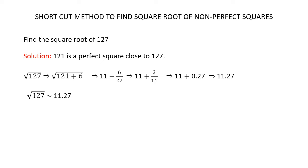Find the square root of 127. Since 121 is a perfect square close to 127, write the square root of 127 as the square root of (121 + 6), because 121 + 6 = 127. The square root of 121 is 11. Write the plus sign, place 6 in the numerator, and multiply 11 by 2 to get 22 in the denominator. Now we have 11 + 6/22 = 11 + 3/11. Since 3/11 ≈ 0.27, we get 11 + 0.27 = 11.27. So the square root of 127 is approximately equal to 11.27.